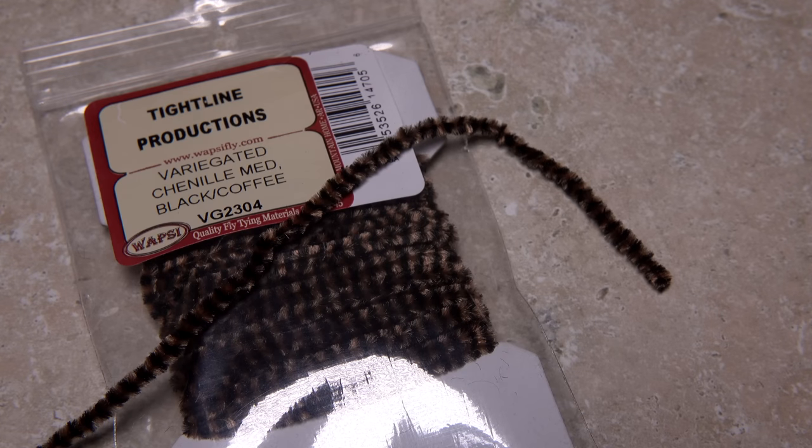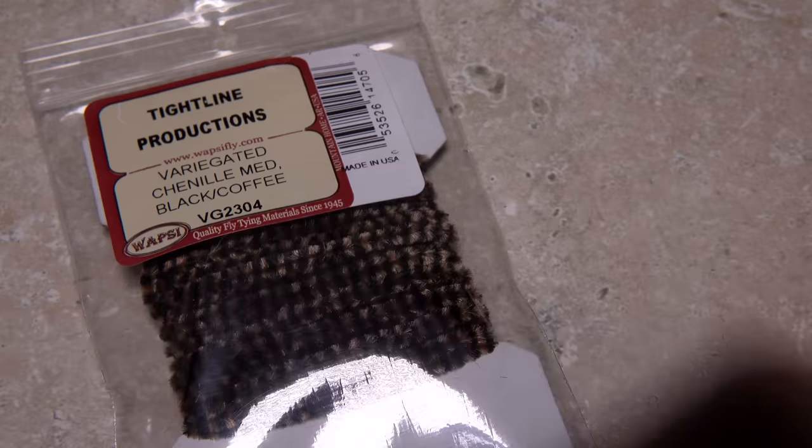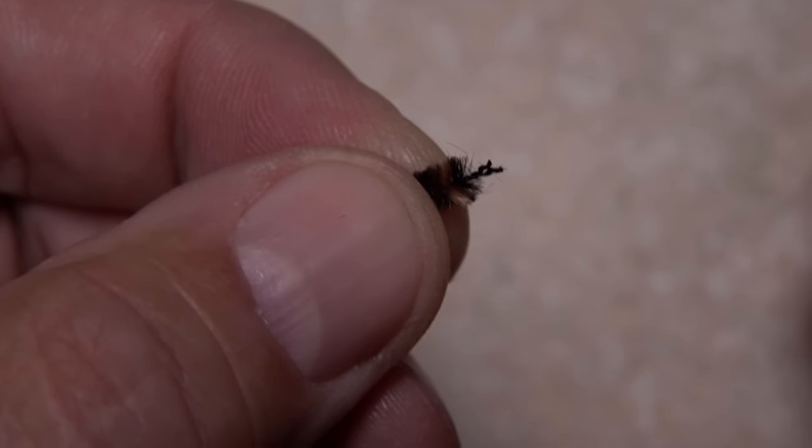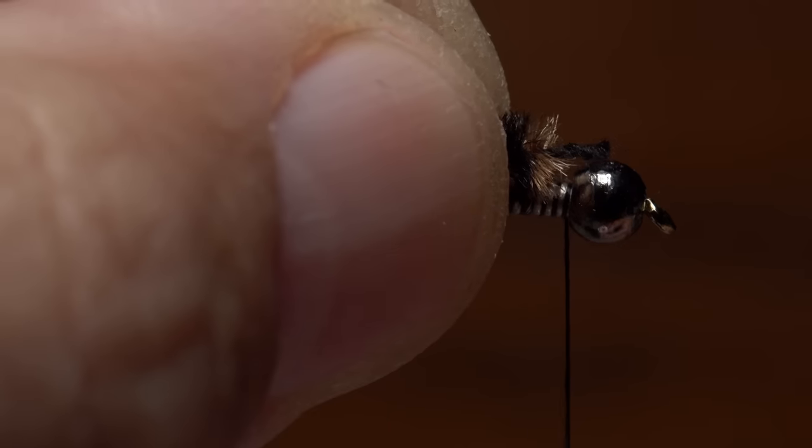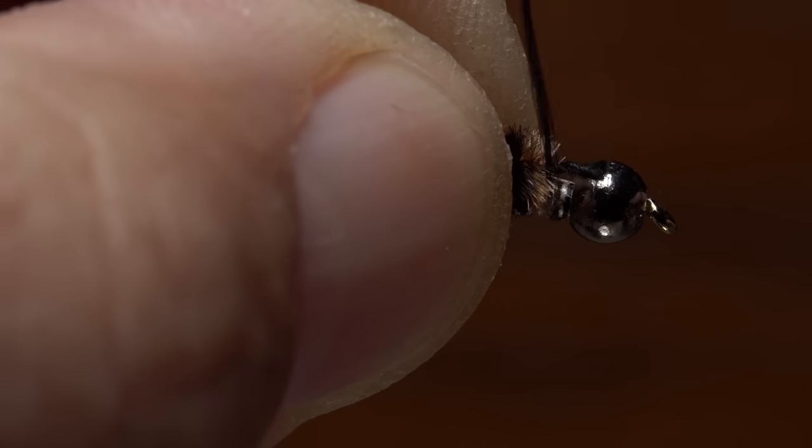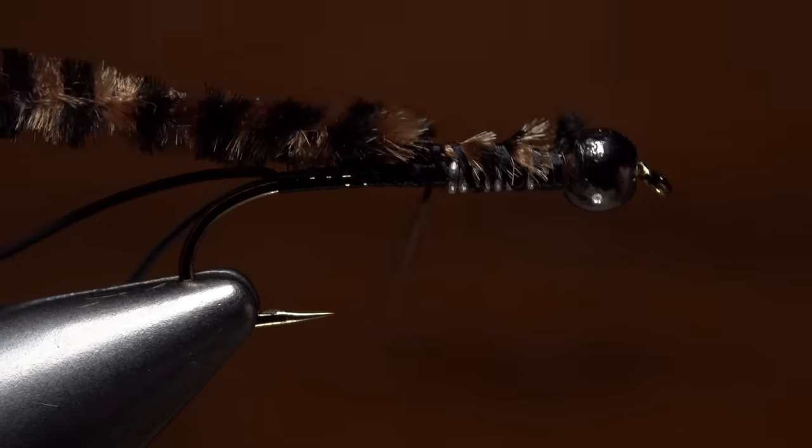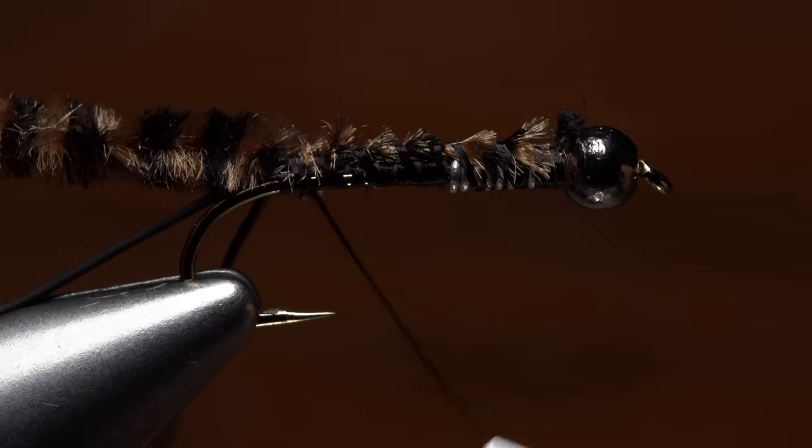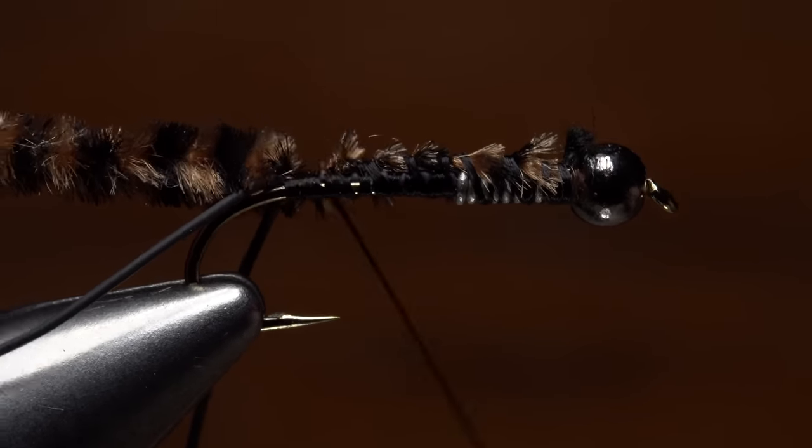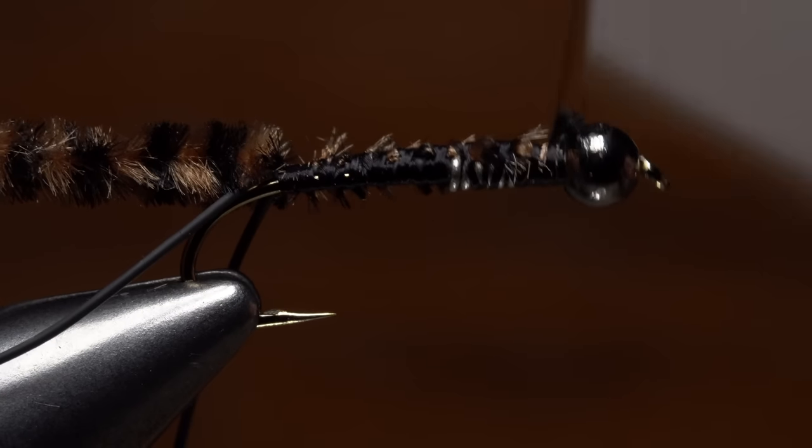Black and coffee-colored variegated medium-sized chenille is used to create the body of the fly. Strip a small amount of material from one end to expose the string core. Secure this string end to the top of the hook shank behind the bead and bind the material down, allowing it to roll to the far side of the hook. When you reach the base of the tails, start taking thread wraps forward all the way back up to the bead.